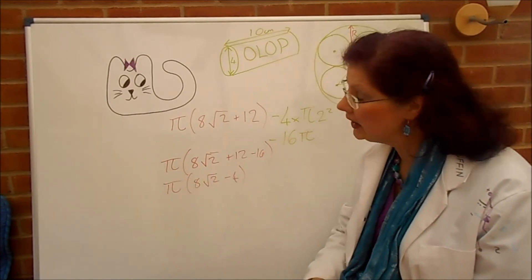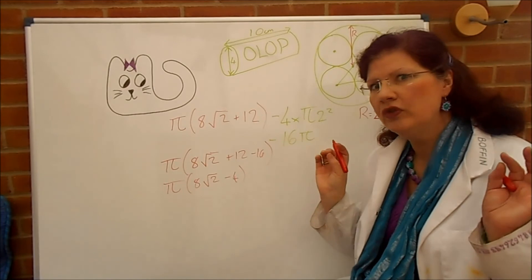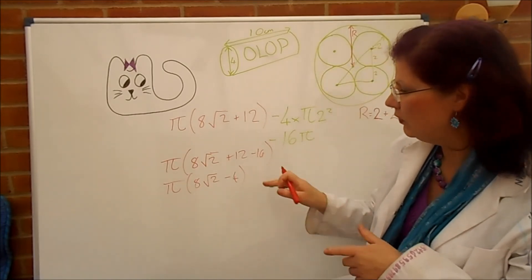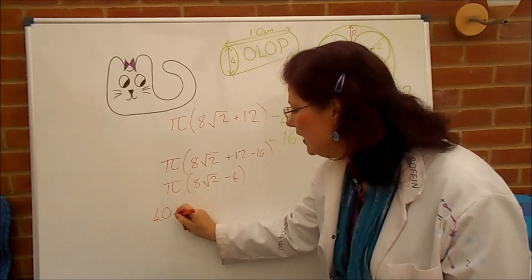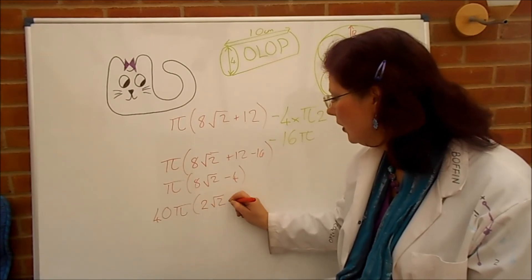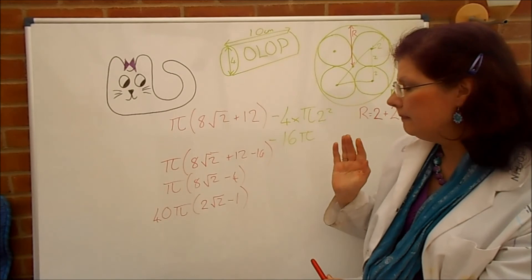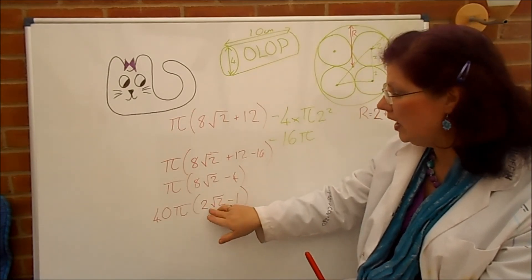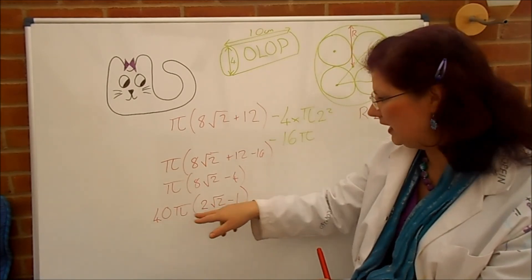Now, we can take a four outside the brackets if we want to there. What I'm also going to do is multiply by ten because of course we want the wasted volume not the cross-sectional area. So, taking a four outside the brackets and multiplying by ten we're going to get a forty pi and that's going to be a two root two minus one in there. Okay, so that's your answer in cm cubed. You could if you wanted to multiply that out and call that an eighty pi root two minus forty pi.